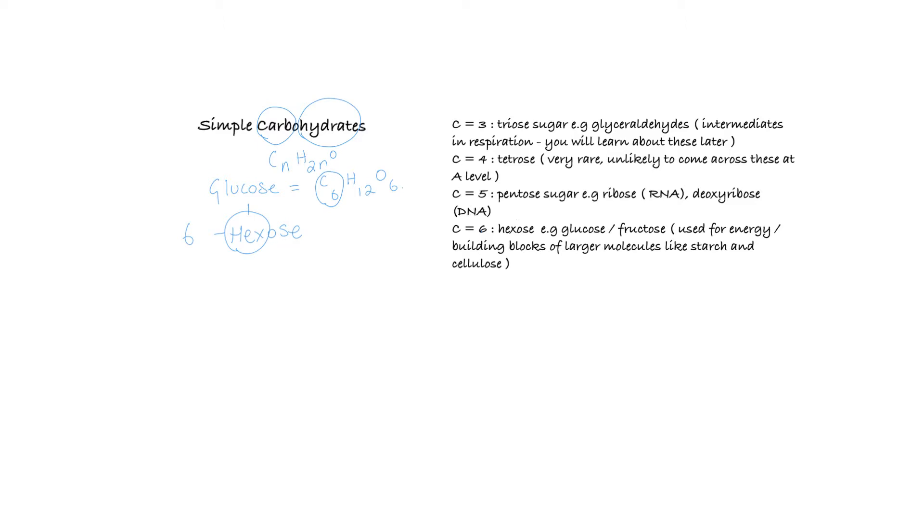What I want to look at today is the structure of both alpha and beta glucose. Alpha and beta glucose are optical isomers of each other. Optical isomers are molecules that are basically mirror images of each other. They have exactly the same chemical formula, exactly the same molecular weight, but they form mirror images of each other.